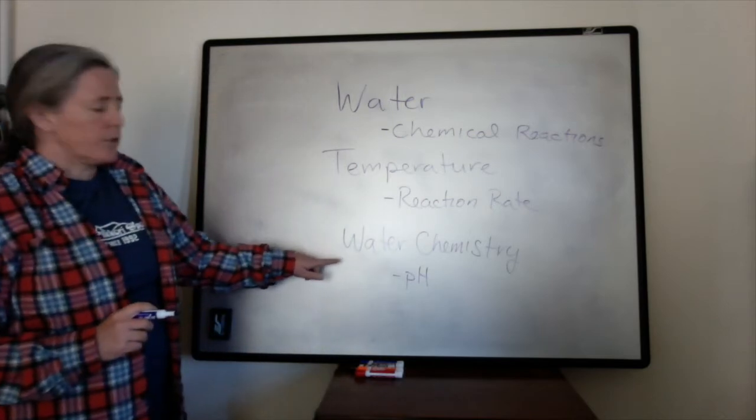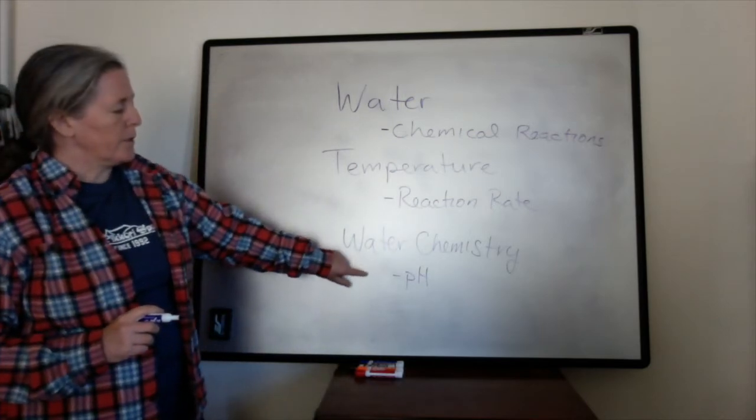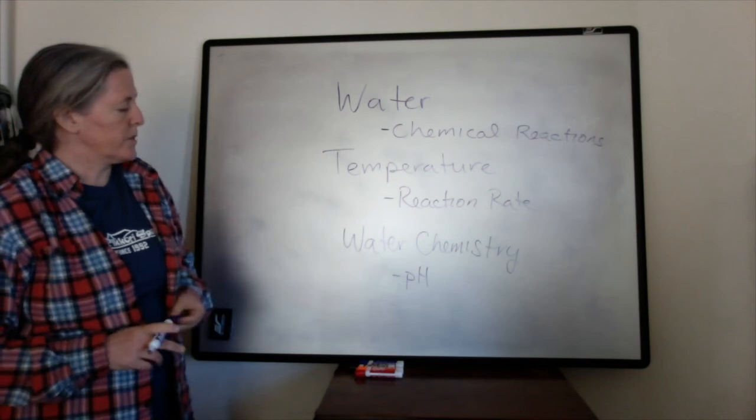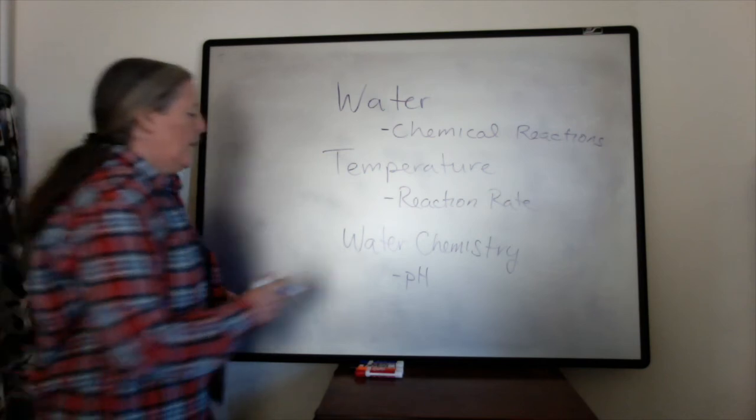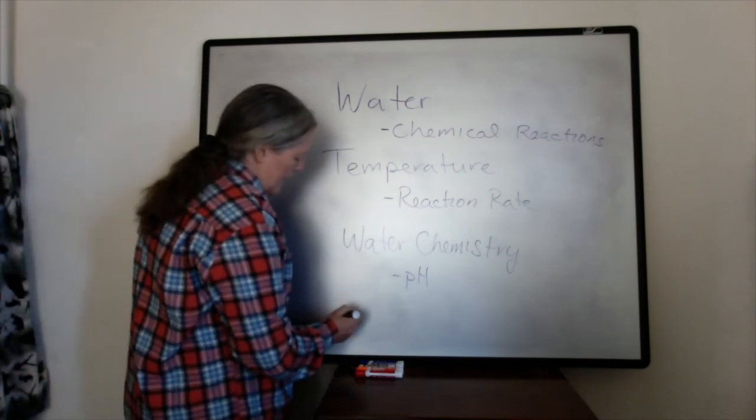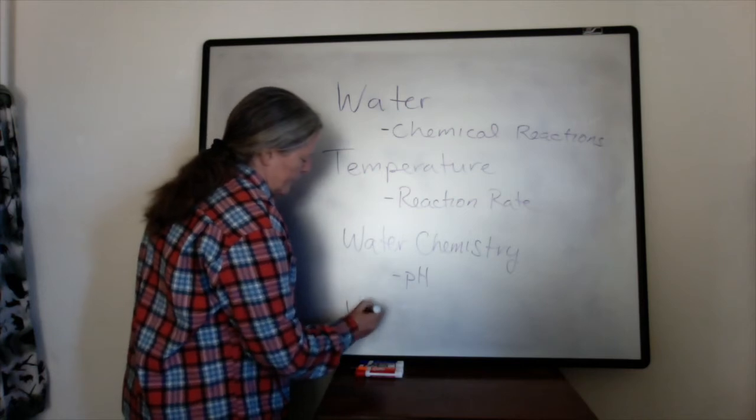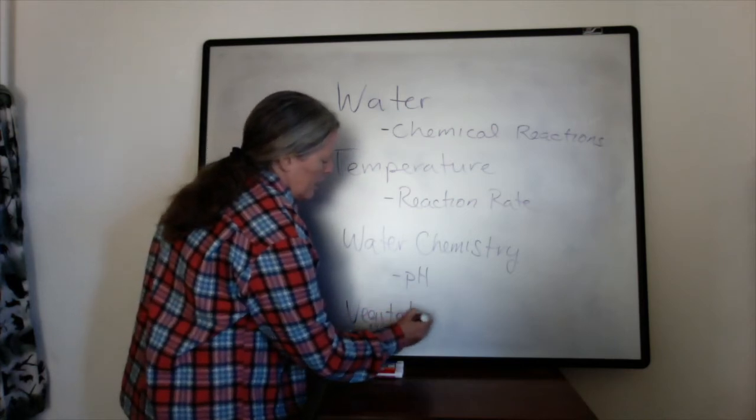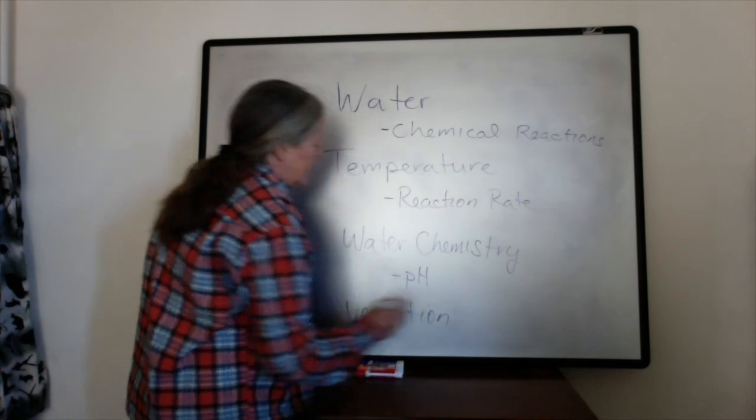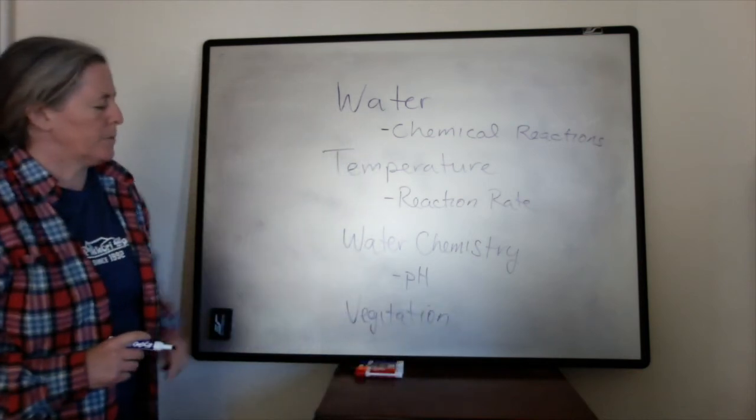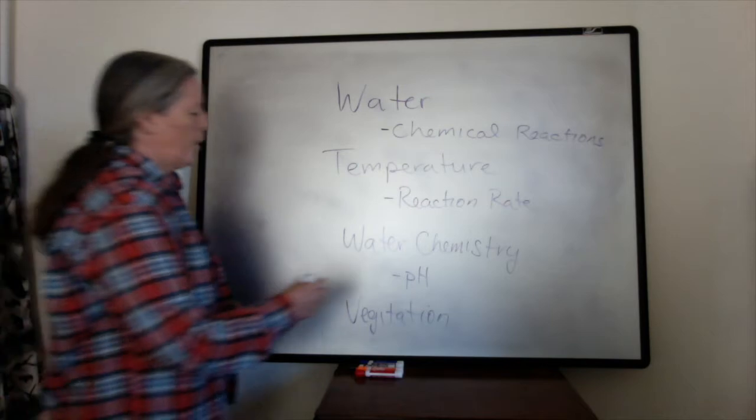This actually is really important in terms of plants. And so I'm going to put vegetation as a fourth key aspect of chemical weathering.